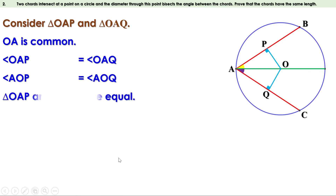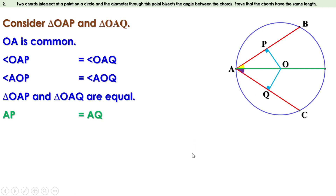Triangle OAP and triangle OAQ are congruent. When two triangles are equal, the sides opposite to equal angles are equal. These two angles are equal, therefore the sides opposite to them are also equal — that is, AP and AQ are equal. We know AP is half AB and AQ is half AC. Since AP equals AQ, AB and AC are also equal.